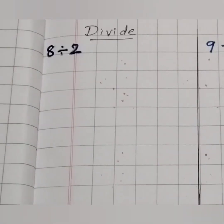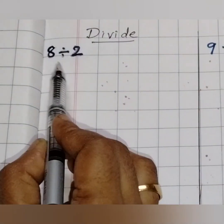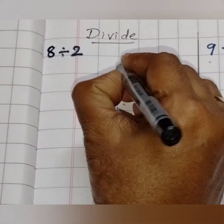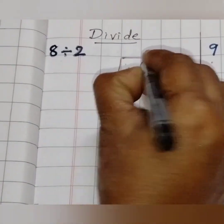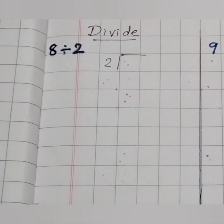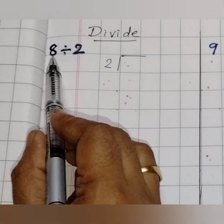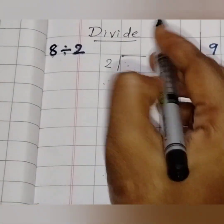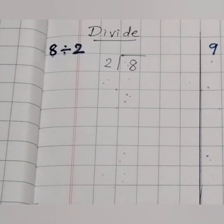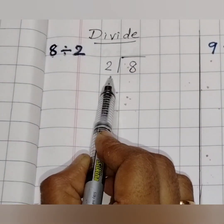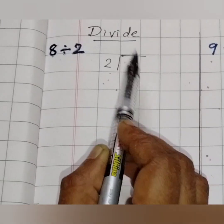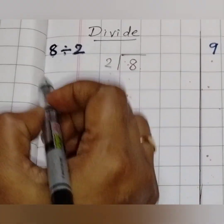Now let us start our division. Our first question is 8 divide by 2. 2 is the divisor and 8 is the dividend. The dividend is the number we are going to divide. Now we have to check in the 2 table when 8 comes.